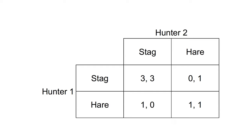If Hunter 2 hunts the stag, Hunter 1 can either hunt the stag and catch it or hunt the hare and catch it — they would choose to hunt the stag as it gives a payoff of 3 compared to 1. If Hunter 2 hunts the hare, Hunter 1 can either hunt the stag and not catch it or hunt the hare and catch it — they would choose to hunt the hare as it gives a payoff of 1 compared to 0. Similarly, if Hunter 1 hunts the stag, Hunter 2 can either hunt the stag and catch it or hunt the hare and catch it — they would choose to hunt the stag as it gives a payoff of 3 compared to 1. If Hunter 1 hunts the hare, Hunter 2 can either hunt the stag and not catch it or hunt the hare and catch it — they would choose to hunt the hare as it gives a payoff of 1 compared to 0. The Nash Equilibria are stag-stag and hare-hare. On either pair of strategies, neither player has an incentive to change.